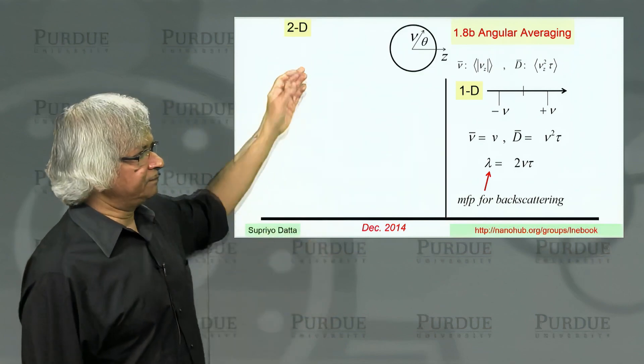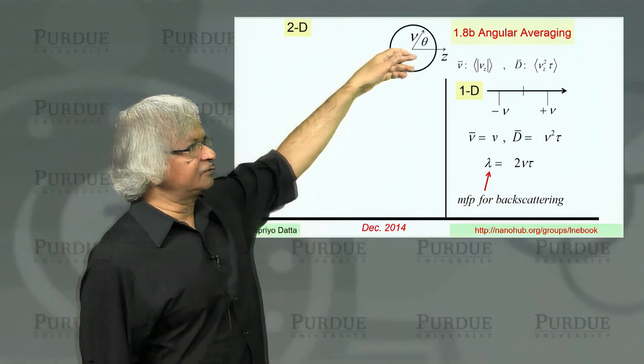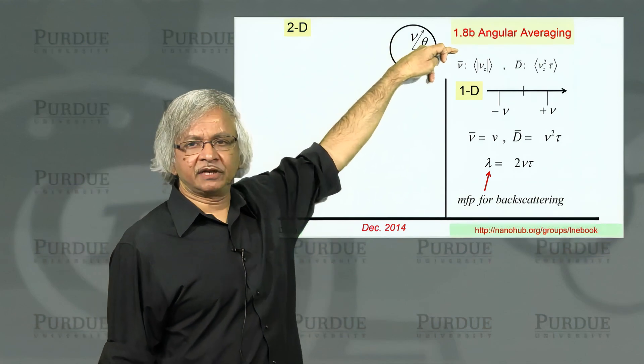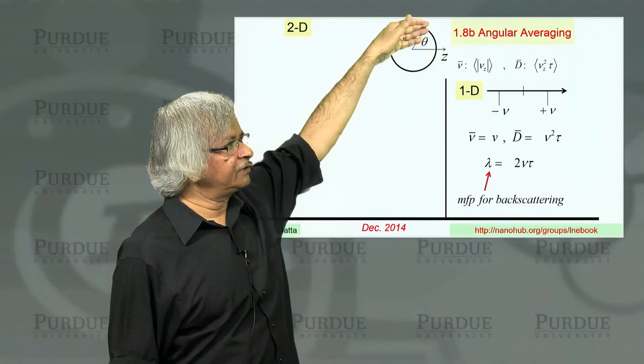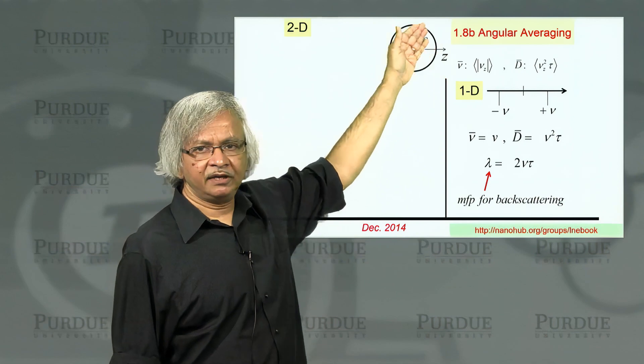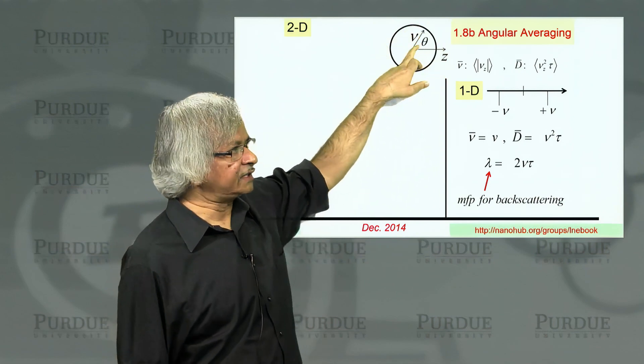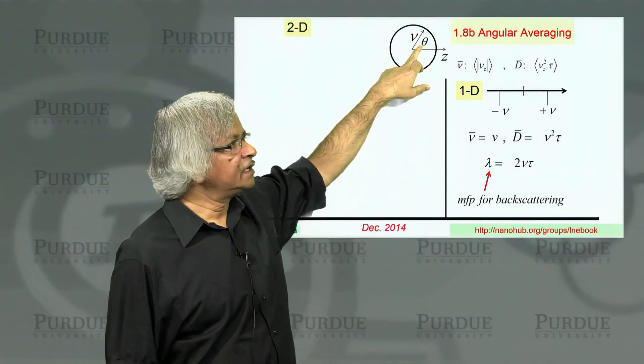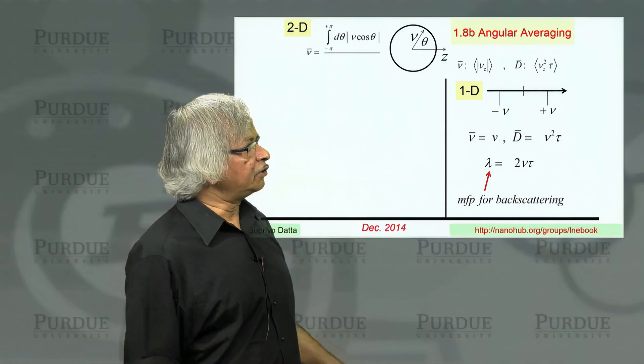So let's do 2D. So in two dimensions, of course, we have the z direction, which is the direction between source and drain. And then you have electron velocity, which can be at any angle, say the angle theta.